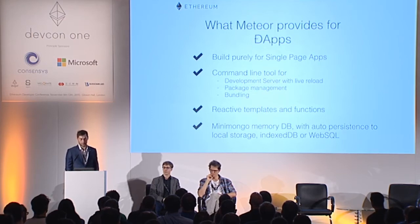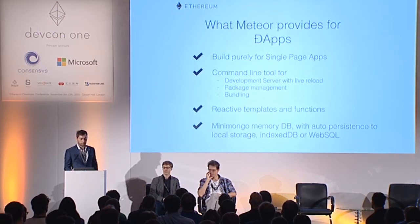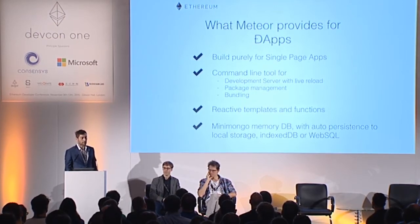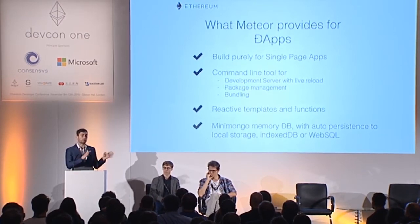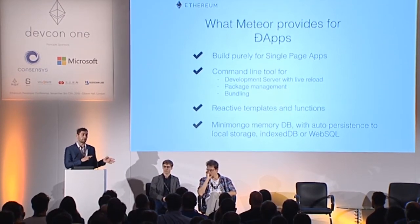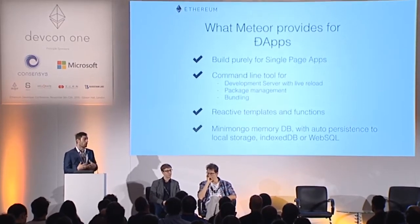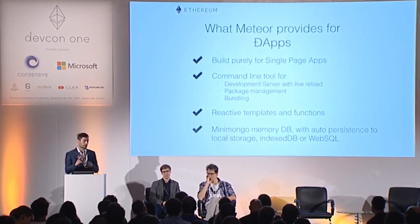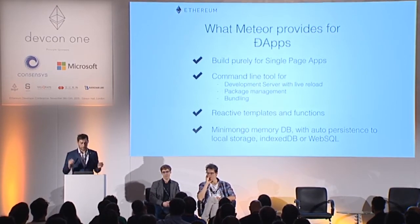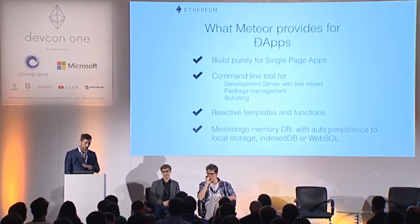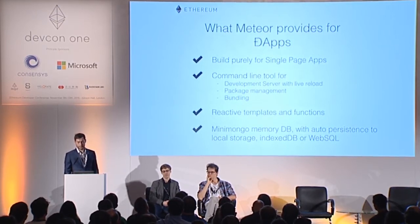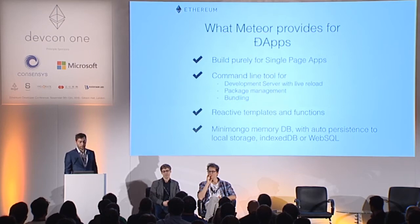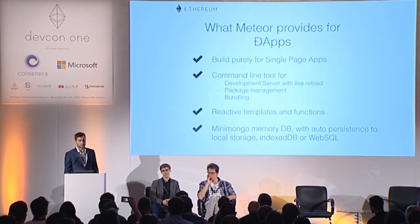Another major point is reactive templates. This basically means when your data sources change — so anything you get from the blockchain — your interface will update automatically. This means your interface will always be consistent. You don't have any kind of spaghetti code where you try to keep track of things or write endless bindings to get things right — it just always displays the correct data.